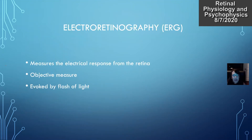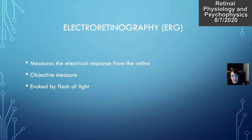ERG measures electrical response from the retina. We do it in a dark adapted and light adapted state. It's an objective measure which is helpful in diagnosing different retinal issues, and it's evoked by a flash of light of different intensities.